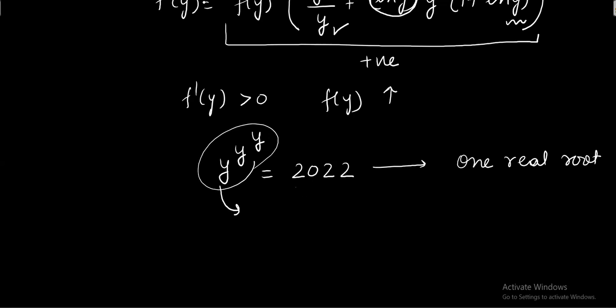At y equals 2 the value turns out to be less than 2022. 2 to the 2 to the 2 is nothing but 16, and as y increases at infinity it tends towards infinity. So we can say that because the graph is continuously increasing, we will have exactly one real value of y which will be satisfying this equation.